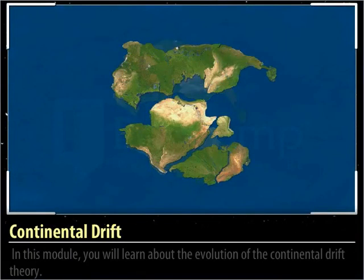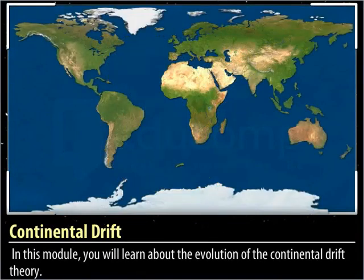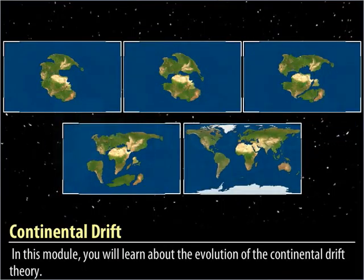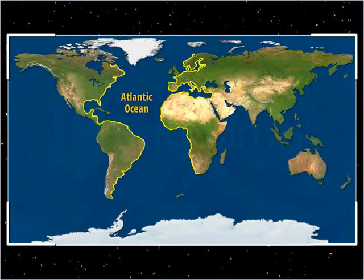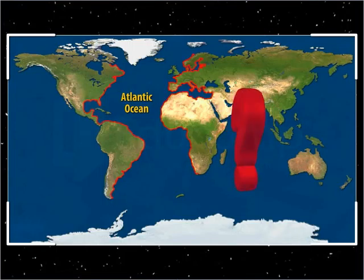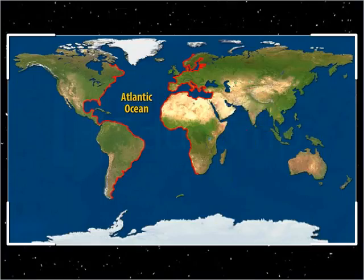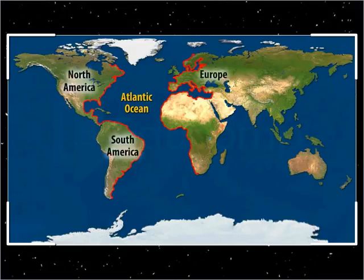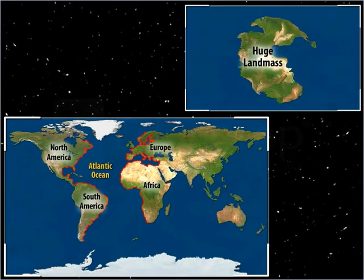Continental Drift. In this module, you will learn about the evolution of the Continental Drift Theory. Observe the coastline of the Atlantic Ocean. Can you see the symmetry of the coastlines on either side of the ocean? Many scientists noticed this similarity and considered the possibility of the two Americas, Europe and Africa, being drifted away from a huge landmass that was once joined together.